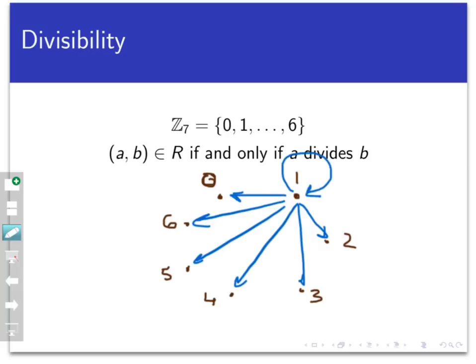Now moving on to the number 2, 2 divides 0, itself, and 6, but nothing else. So we're going to draw 3 edges this way. And then we're actually going to have to draw a loop as well from 2 to itself. The number 3 divides 0, itself, and 6, so I draw the loop, and then these two other edges.